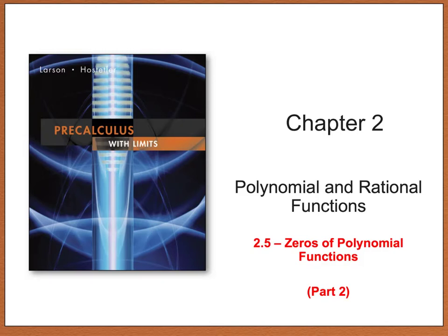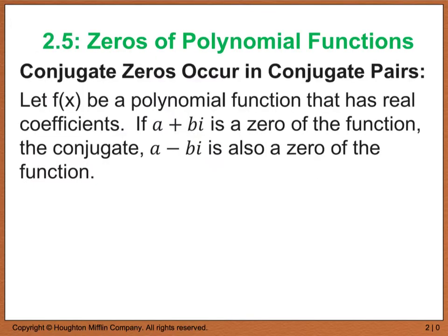Hello and welcome back to the second part of section 2.5. If you recall, we were dealing with the zeros of polynomial functions. If you remember back to the first example that we did, we came up with zeros that had complex zeros. Within those complex zeros, we actually had the conjugates. So if we had an a plus bi, then we also had a zero at a minus bi. And that's exactly what the conjugate zeros and conjugate pairs rule says.